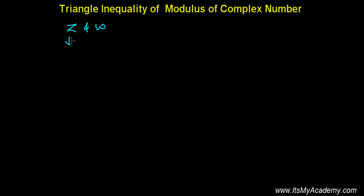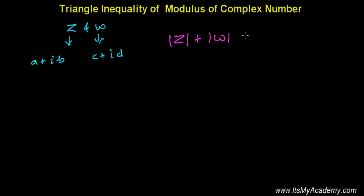The triangle inequality of modulus of complex numbers states that if we have two complex numbers z and w — say z equals a plus ib and w equals c plus id — then the sum of the absolute values of the two complex numbers is always greater than or equal to the absolute value of their sum.